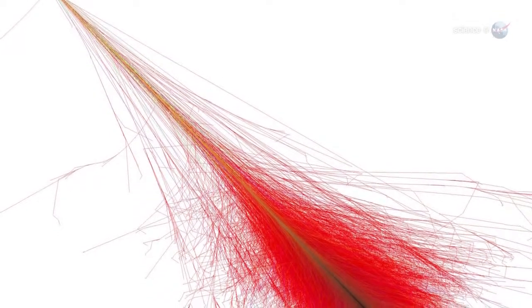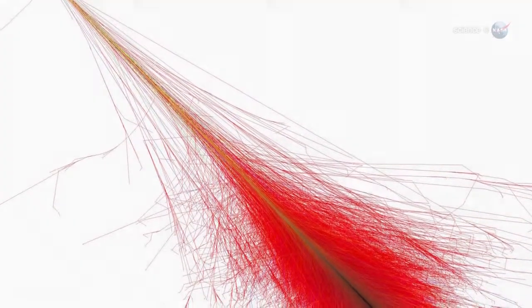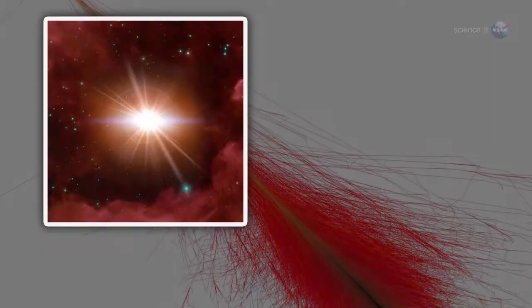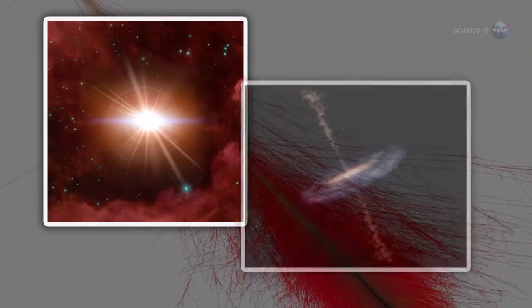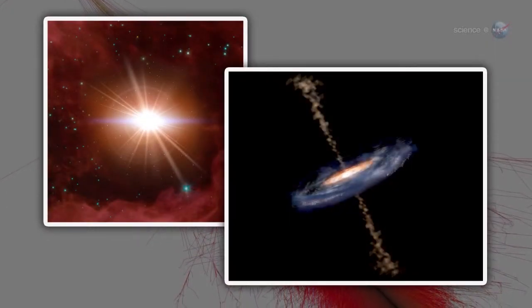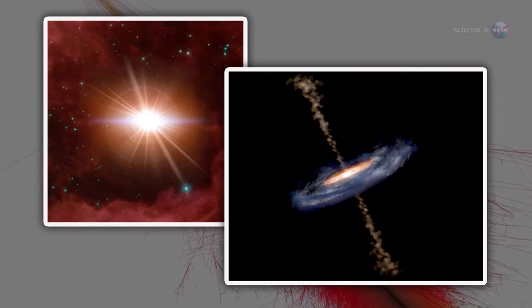Cosmic rays are subatomic particles such as protons and helium nuclei accelerated to near light speed by supernova explosions and other violent events in the cosmos. Researchers have long thought that cosmic rays contain a sprinkling of antimatter.